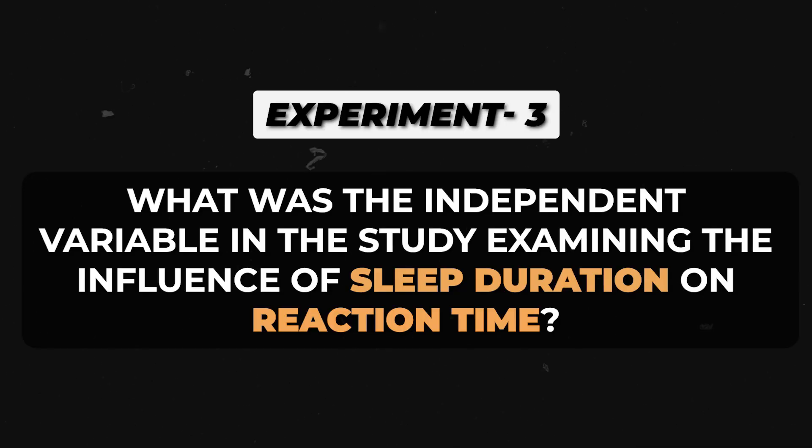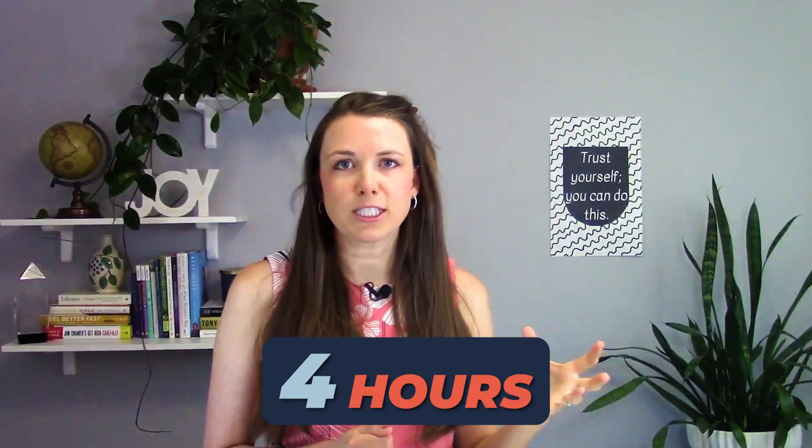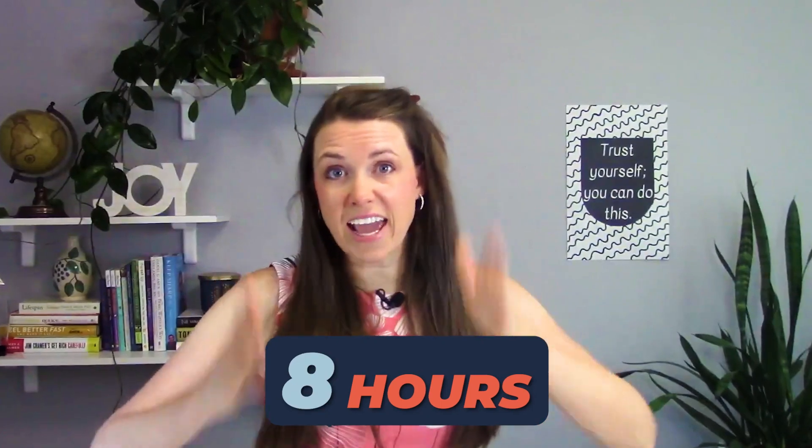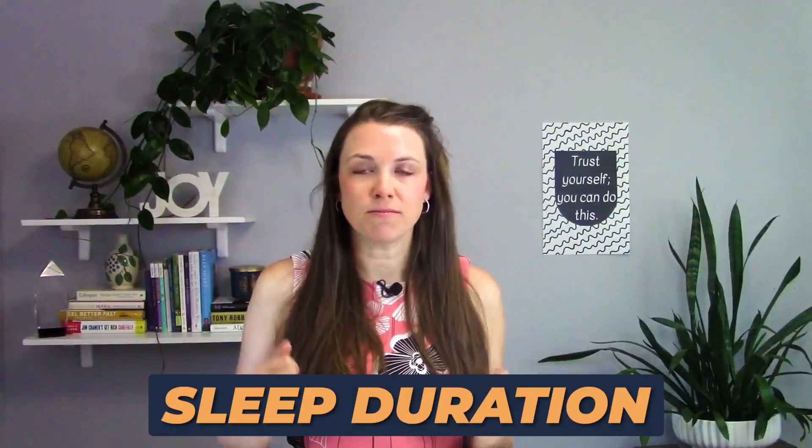What was the independent variable in the study examining the influence of sleep duration on reaction time? Imagine an experiment where you slept for four hours, eight hours, or ten hours, and then had to react — maybe clicking a button when you see a red light. What is it that I change? I change the sleep duration, and then the reaction time is the dependent variable.